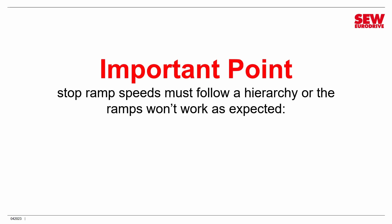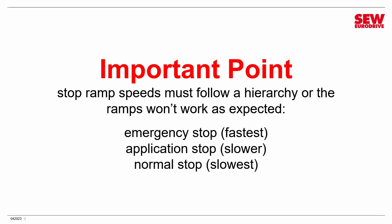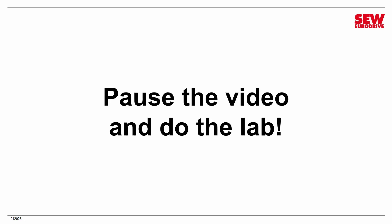An important point: stop ramp speeds must follow a hierarchy or they won't work as expected. The most emergency stops need to be the fastest. Emergency stop should be the fastest, application stop a little slower, and normal stop the slowest. If you don't follow this hierarchy, the system does odd things. If you see odd stop behavior, check your different ramps — you may have violated the hierarchy. Now pause the video, do the lab, and come back for the walkthrough.